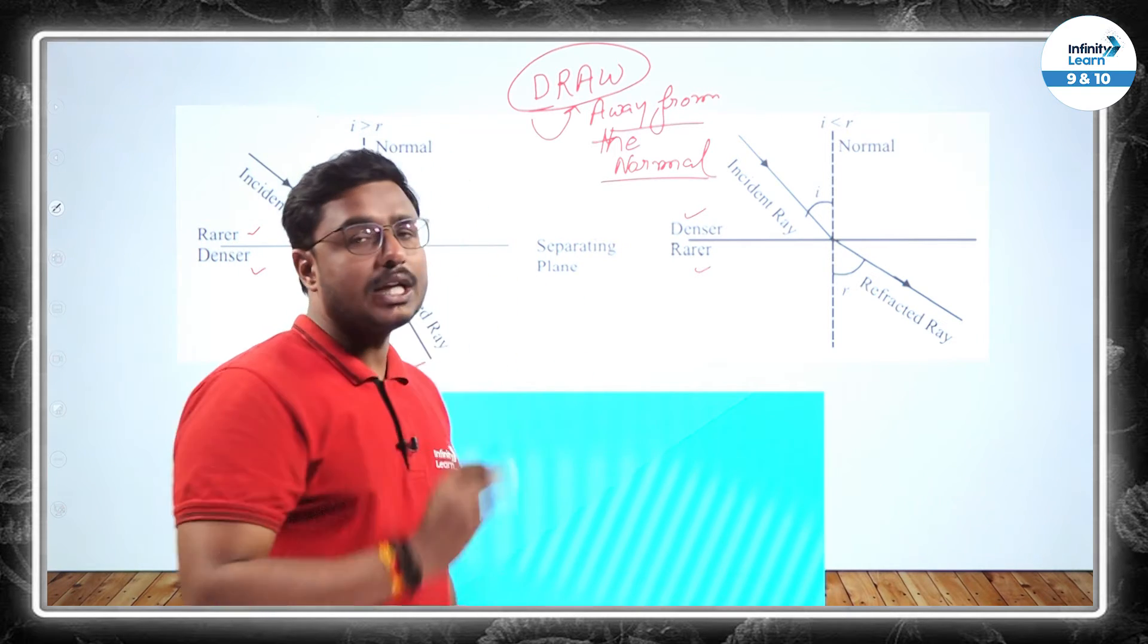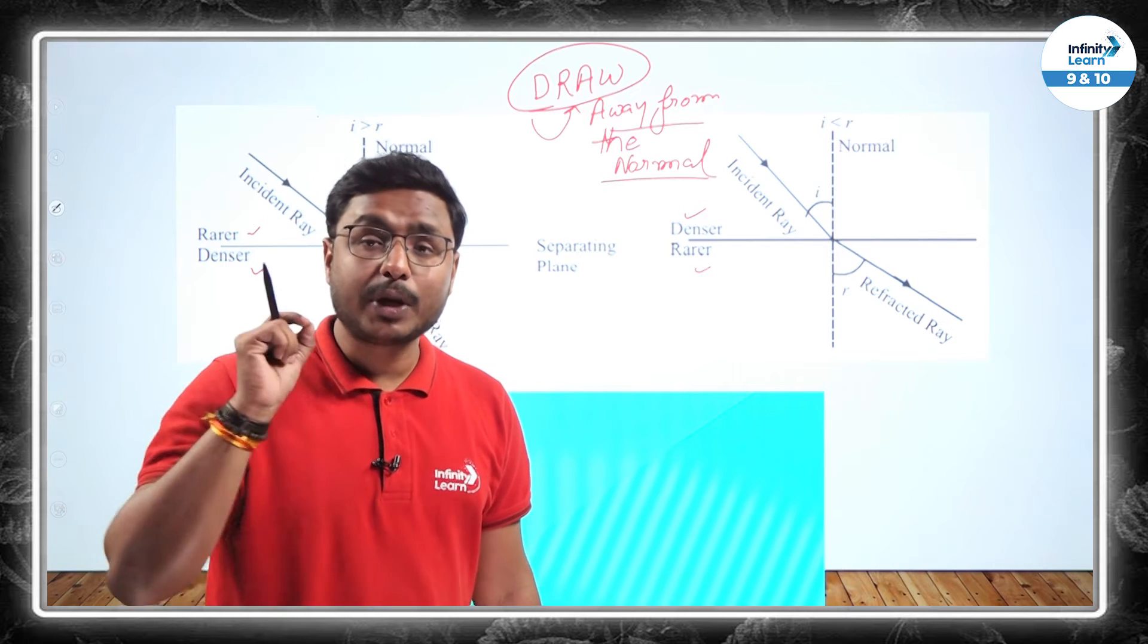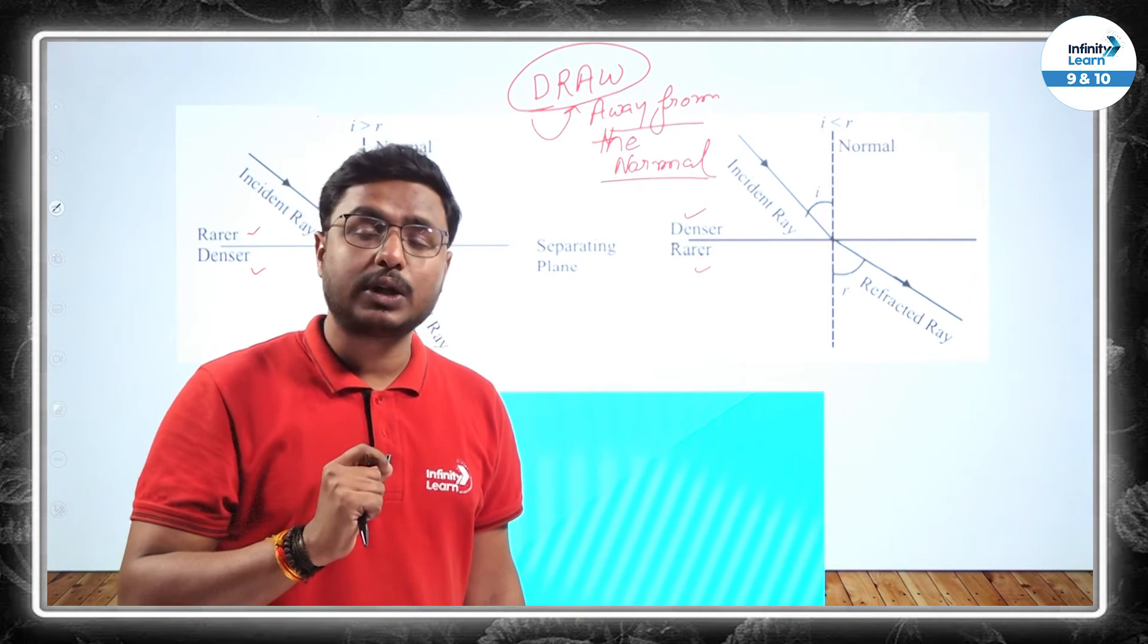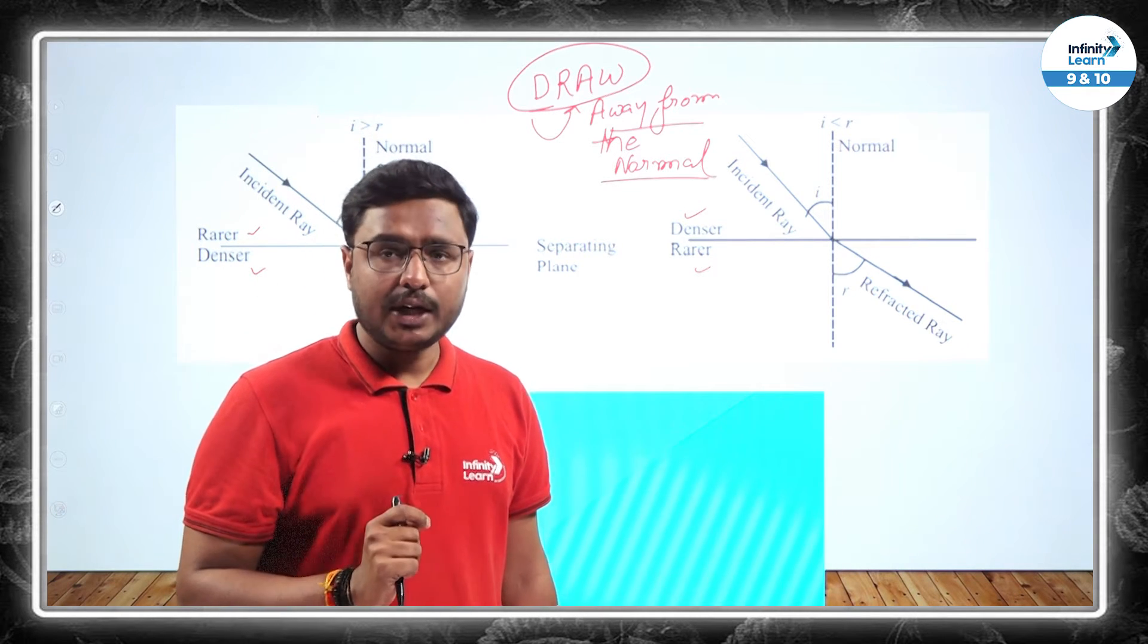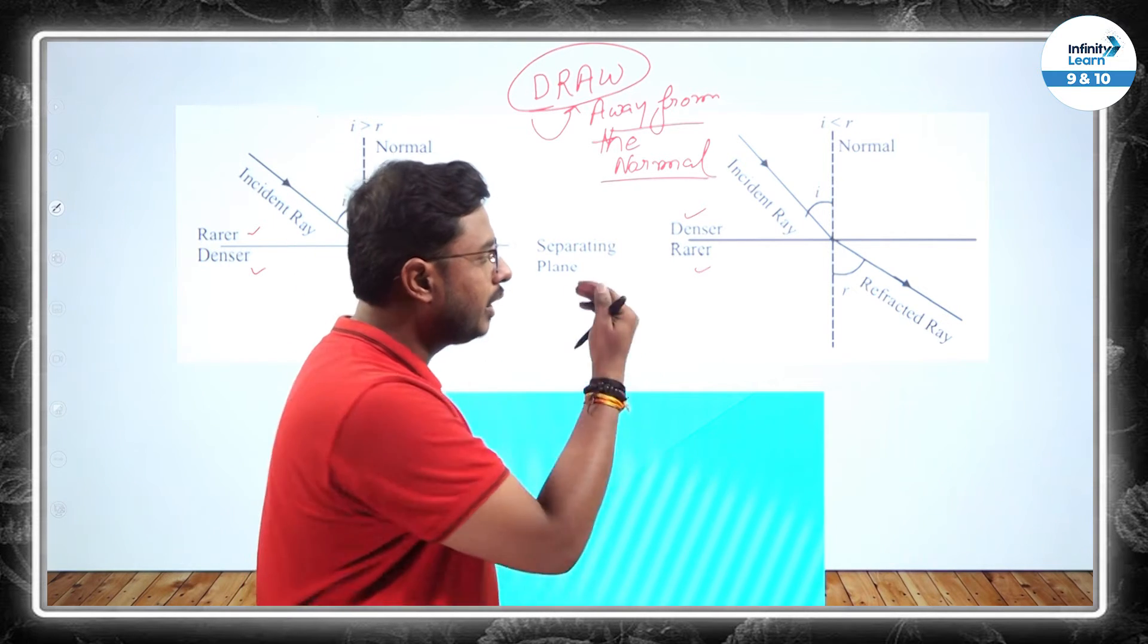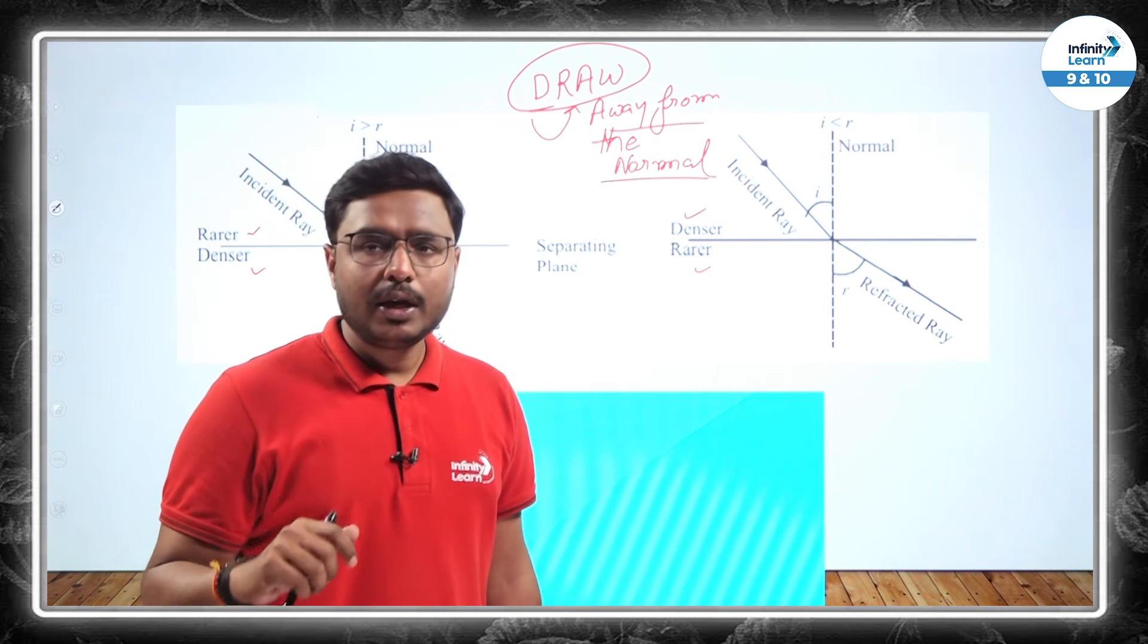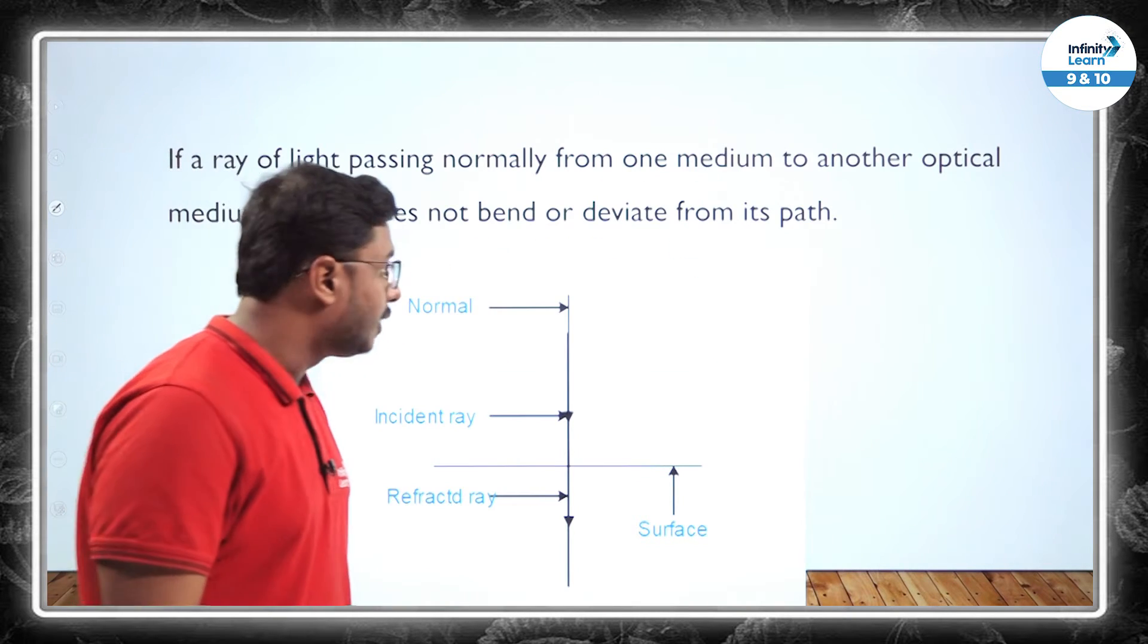And why this change in path? Why this is happening if someone asks you? The answer is because when the light is passing from one medium to another medium, we all know that there will be the change in our speed of light. So in air or in vacuum, we know that it is maximum three into ten to the power eight meter per second. But as soon as it is coming in some other medium, its speed is going to reduce. And accordingly which we are going to decide which one is denser, which one is rarer medium.